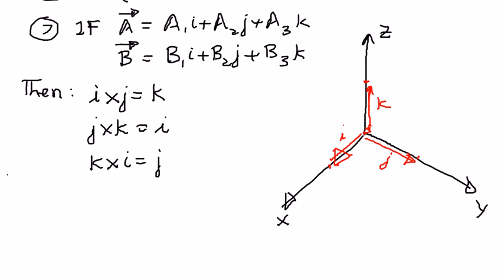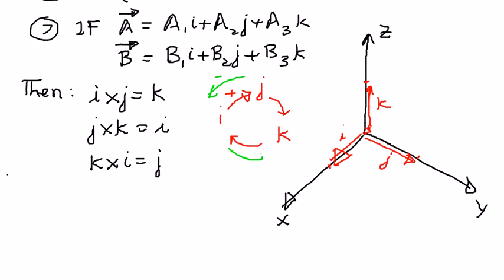One easy way to remember: draw i, j, and k in a cycle. If we travel in the forward direction around the cycle, the cross products are always positive. If we travel in the other direction — for example, from j to i — that would be negative. Going from i to j in the reverse direction would also be negative, and from k to j would be negative as well.